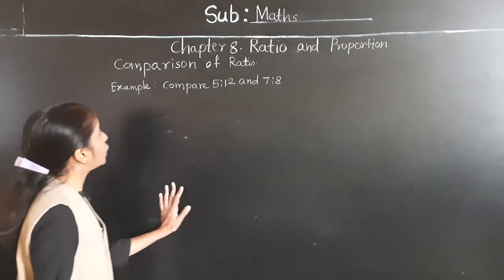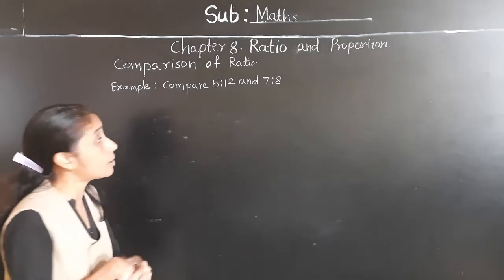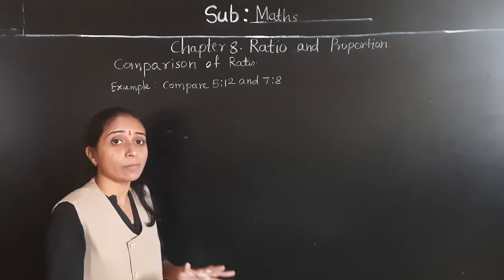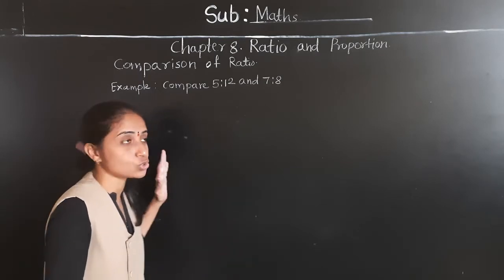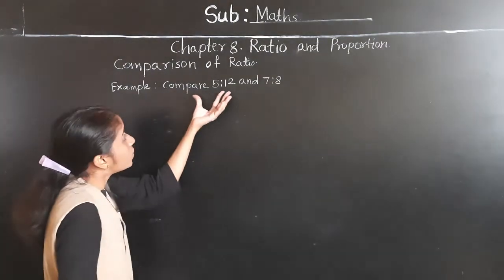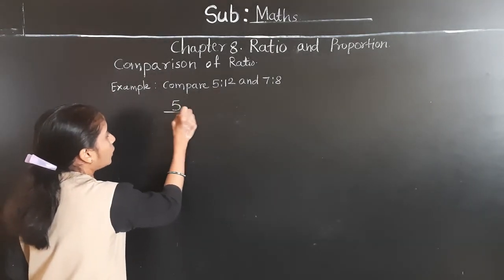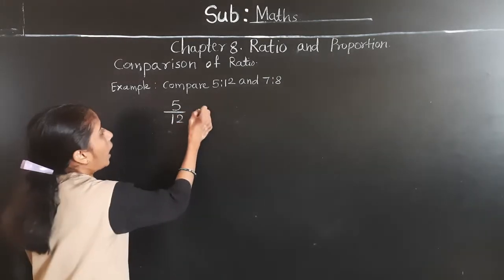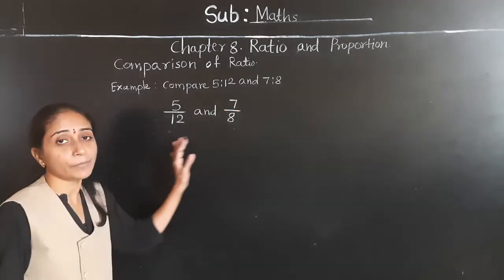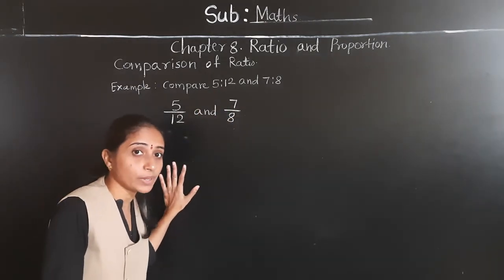Now let's learn the comparison of ratios. Example: compare 5 is to 12 and 7 is to 8. To compare ratios, we first write them in the form of fractions — the same way we compare fractions. So 5 is to 12 becomes 5 upon 12, and 7 is to 8 becomes 7 upon 8.